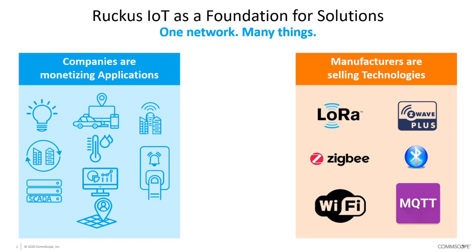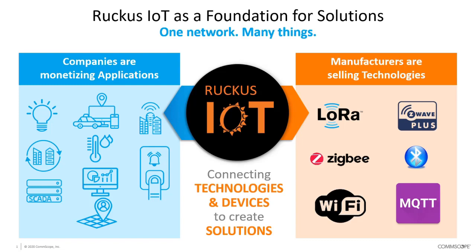The problem is that these two are disconnected. You have manufacturers building technology and companies monetizing applications, with nothing really joining them together to meet end users' requirements. This is really where the Ruckus IoT Suite comes in — it allows us to connect the technology and the applications together to provide solutions.